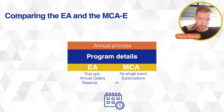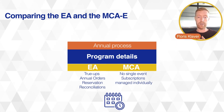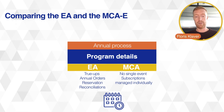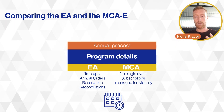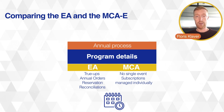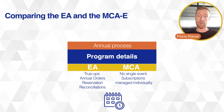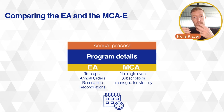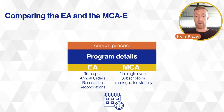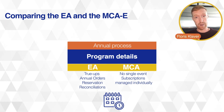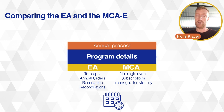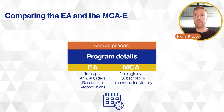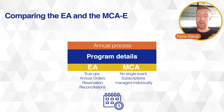The annual processes in the EA — true-ups, annual orders, reservation reconciliations — are not available or required in the MCAE. Instead you manage your subscriptions individually. What you do need to take care of is any renewal: if you sign up for a one-year term, after that year you need to renew those licenses. Make sure you discuss your options with Microsoft regarding discounts or any price adjustments that may have occurred.